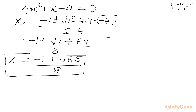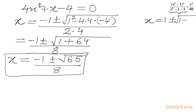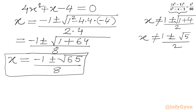Here we have two real solutions. We need to check that these do not match our rejected values. The denominator x squared minus x minus 1 equals 0 gives x equal to 1 plus or minus square root of 5, over 2, which does not match our answer. So we accept our solution: x equals minus 1 plus or minus square root of 65, over 8.